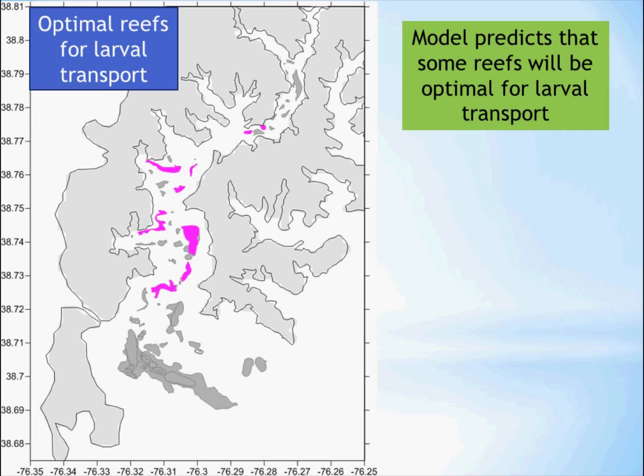Also considered is the ease of enforcement to keep poachers from theft of the oysters once they start breeding in the sanctuaries. The larval transport model predictions are just another one of the factors that can help choose restoration sites within a sanctuary, and have actually been used to help choose restoration sites within Harris Creek.